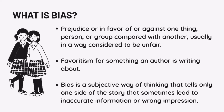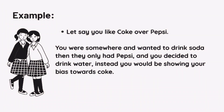Now let's define what bias is. Bias is a prejudice in favor of or against one thing, person, or group compared with another, usually in a way considered to be unfair. Bias is a subjective way of thinking that tells only one side of the story, and sometimes it leads to inaccurate information or wrong impression. For example, let's say you like Coke over Pepsi. You were somewhere and wanted to drink soda, but they only had Pepsi, and you decided to drink water instead — that shows your bias towards Coke.